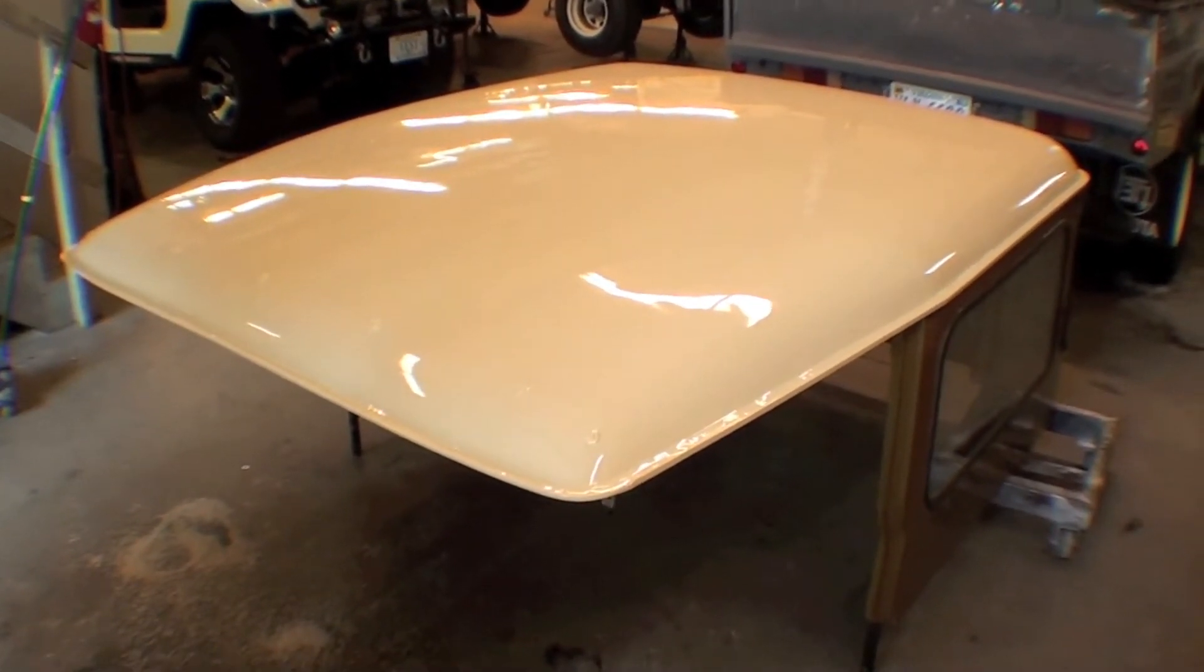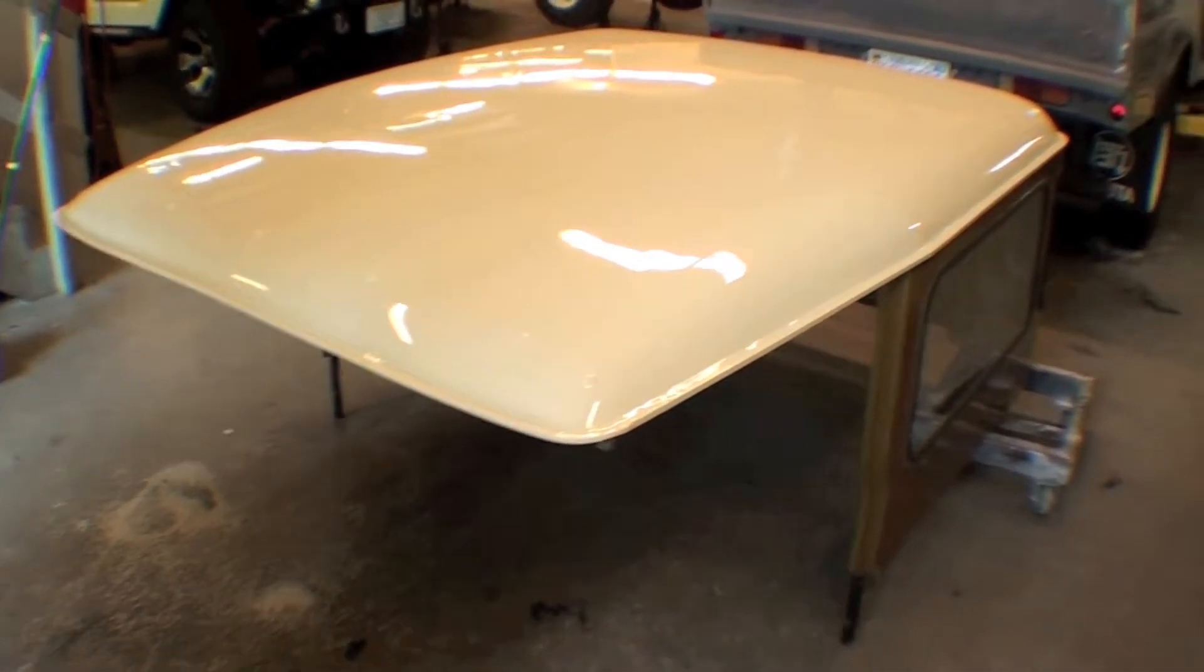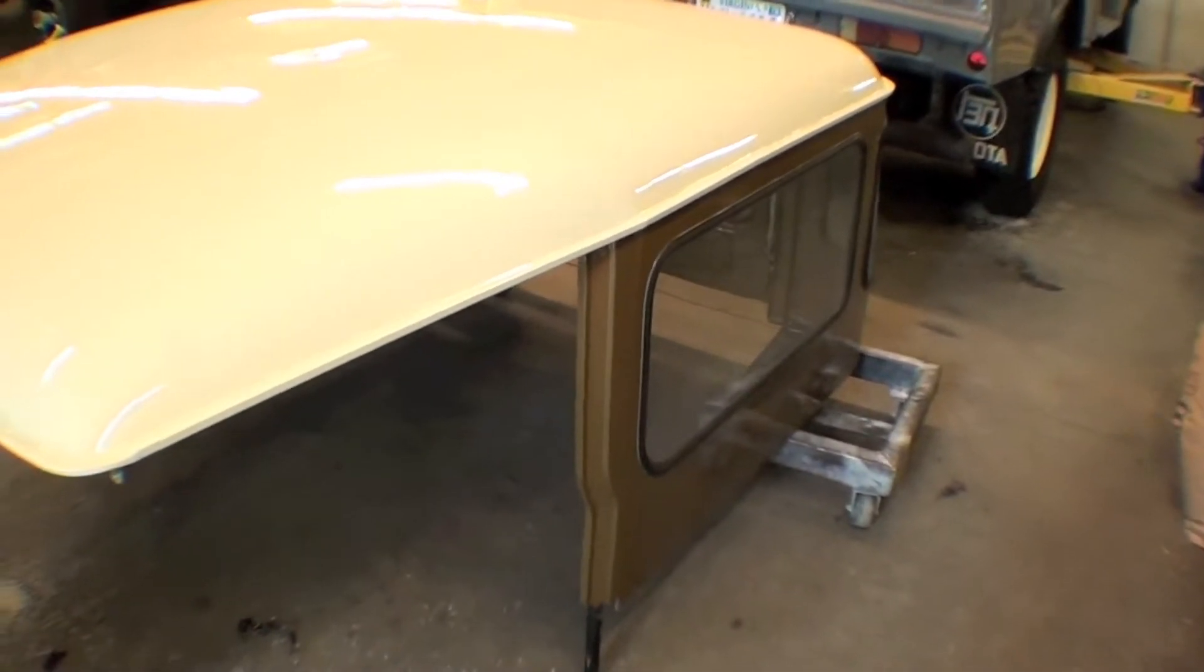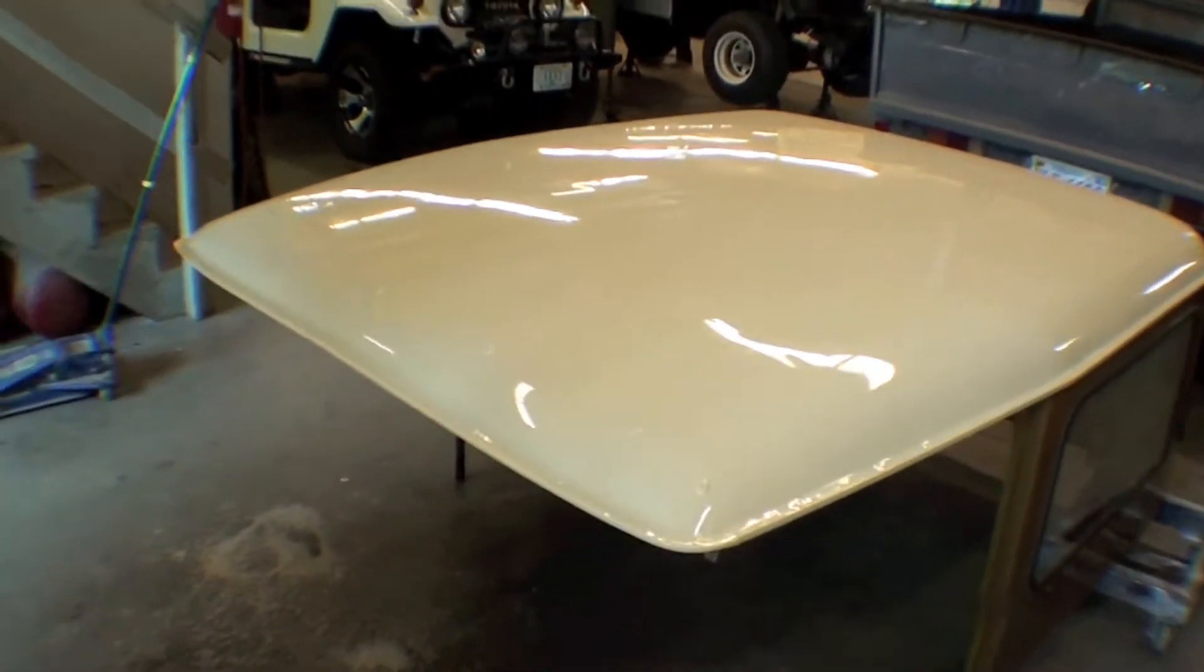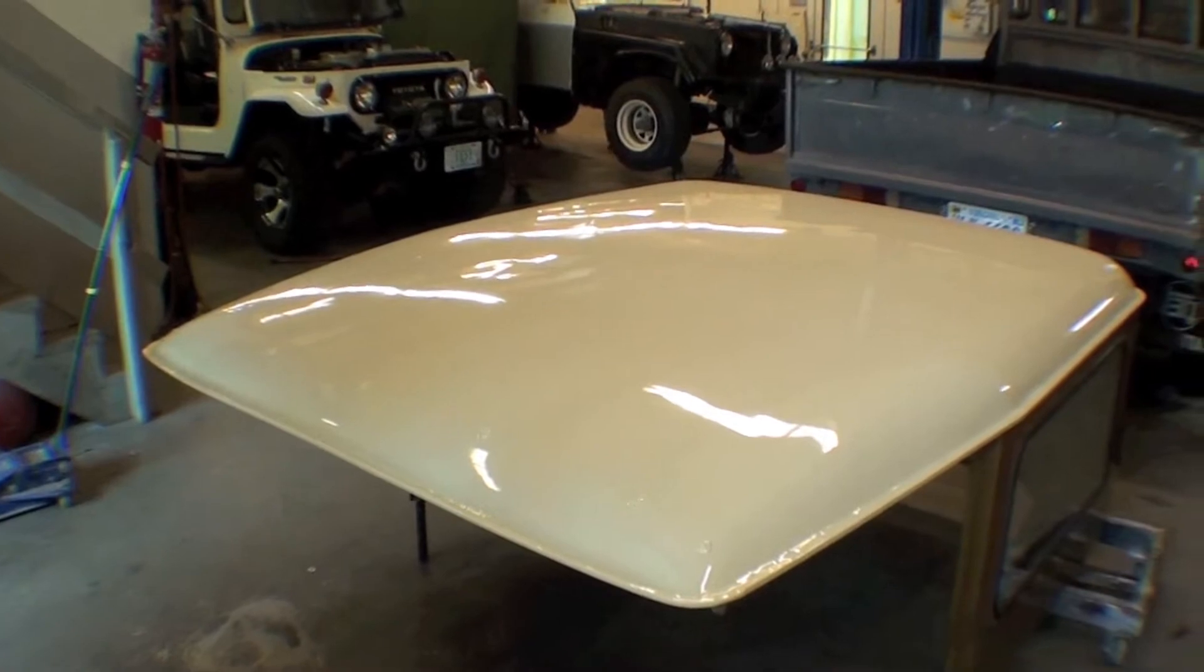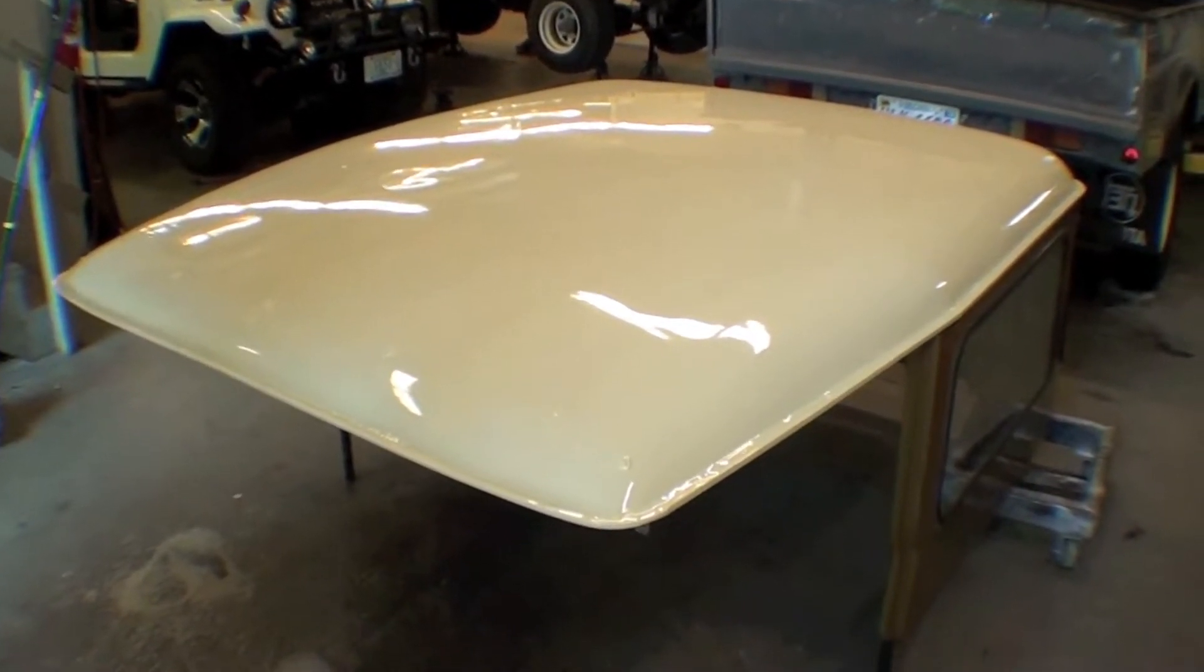One of the other items that we did here was the actual hardtop itself. The sides we have not touched at all, or the rear hatch, but we have put a brand new rear glass and perimeter on and it has been painted up.